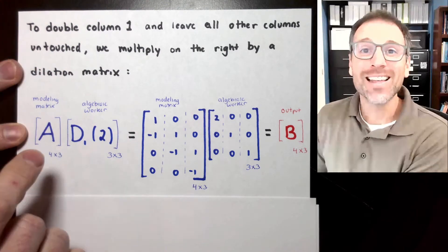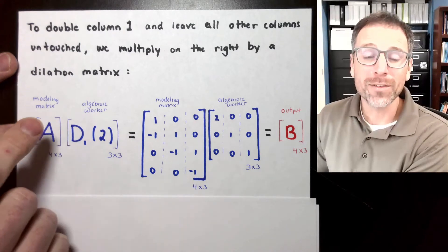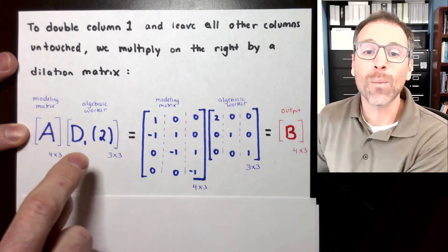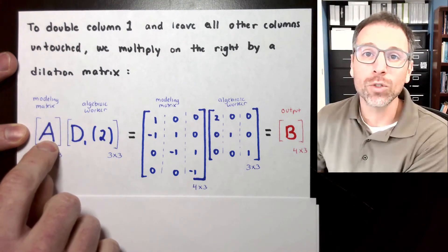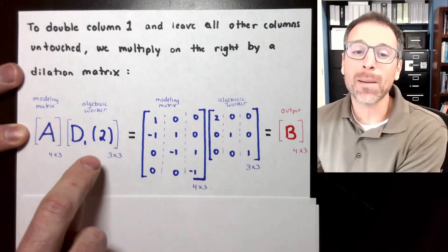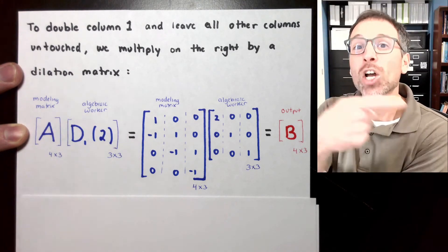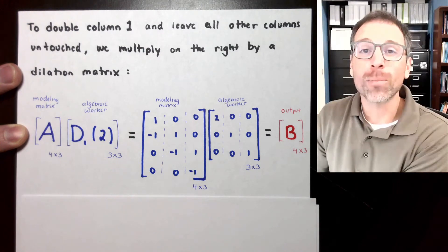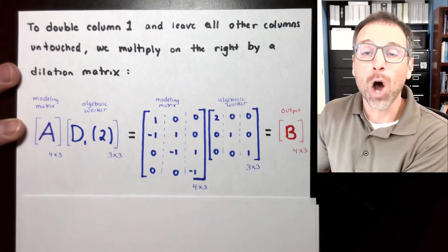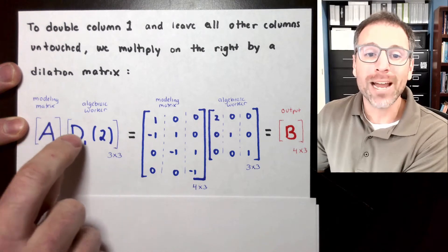This is where things get super fun — when we talked about dilation matrices, that was one of the operations I had in mind. Specifically, we're going to claim that if we have our modeling matrix A, which is a 4 by 3, and we want to multiply the first column of A by 2 and leave all other columns untouched, then we can multiply A on the right by the dilation matrix D1,2. For more information, go back and watch our sequence on outer products and dilation matrices. So remember that we can do the entry-by-entry definitions of each of these.